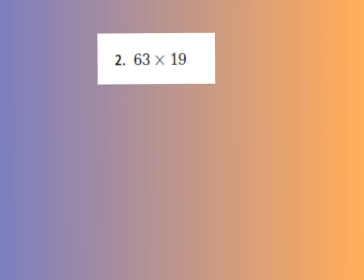Now, instead of rounding the greater factor, we are going to be rounding both factors. So we are going to round 63, and we know that 63 rounds to 60. And we're also going to round the number 19, and we know that 19 rounds to 20.